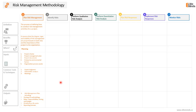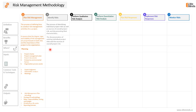Once we have a solid risk management plan, we can start identifying the project risks. This process involves identifying individual project risks as well as the sources of overall project risk and documenting the key characteristics of all identified risks. Throughout this process, we will use techniques like brainstorming, expert judgment, interviews, and focus groups in order to identify as many potential threats and opportunities in the project as possible. We will also determine the key characteristics of those identified risks.